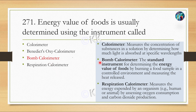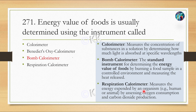The Bomb Calorimeter is a standardized instrument used to determine the energy value of food by burning fat samples in a controlled environment and measuring the amount of heat released. A colorimeter, in contrast, analyzes how much light is absorbed at specific wavelengths. The respiration calorimeter is used to measure energy expended by an organism by assessing oxygen consumption and carbon dioxide production. Let's move to our next question.